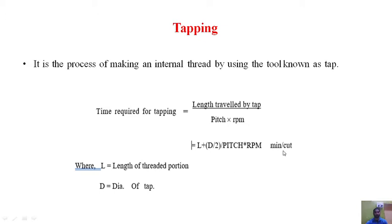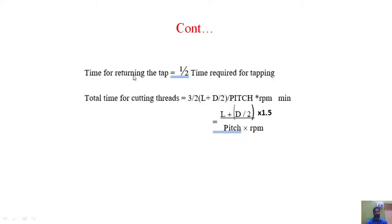That gives the time required for tapping in minutes for one cut. If you are making more than one cut, you multiply by the number of cuts. For one complete cut, we consider both the forward time and the backward time. The forward cut is the actual tapping operation; the backward cut is a dummy (idle) stroke. We consider the return time for the tap as half of the forward tapping time — that is, 30 seconds return if the forward stroke takes one minute.